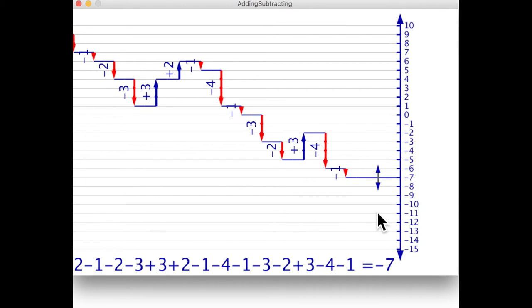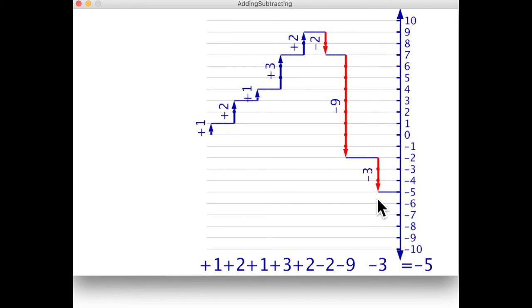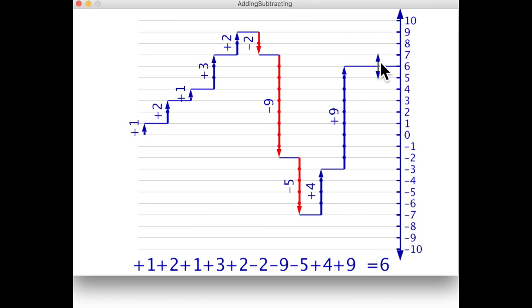Once you have your number line set up you can add and subtract as much as you like. Addition steps move you up the screen in the positive direction and subtraction steps move you down the screen in the negative direction. Your final position is the answer to the equation with all the addition and subtraction steps.